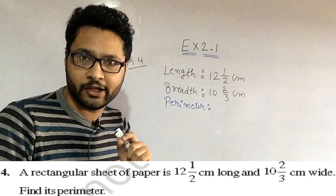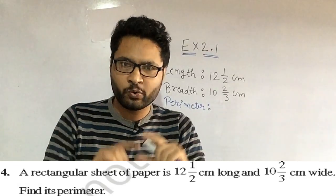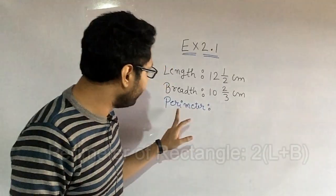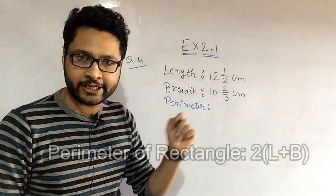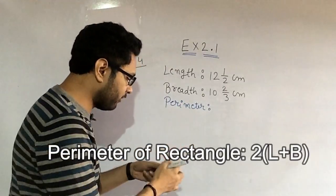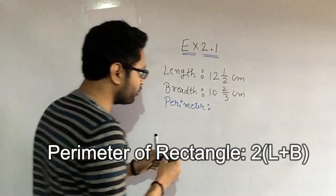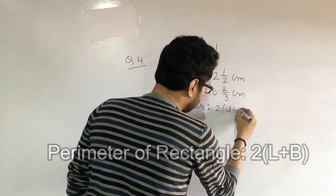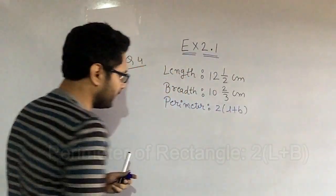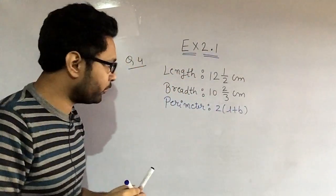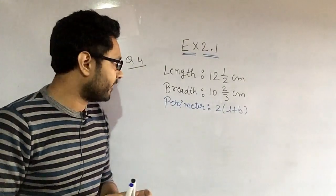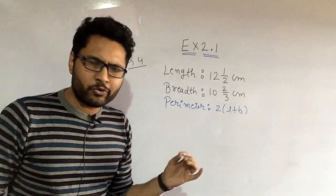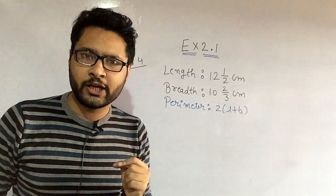We have to find the perimeter, so first of all I want everyone to write down a simple note — the formula of the perimeter of a rectangle is 2(l + b). This is the perimeter formula: 2 times (l plus b).